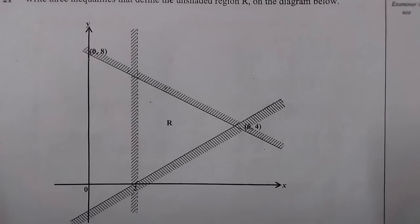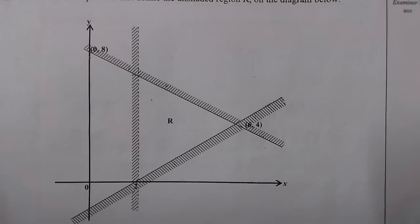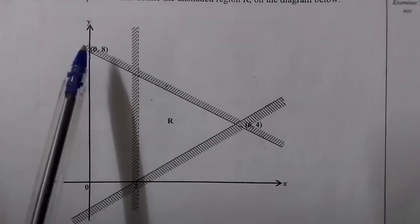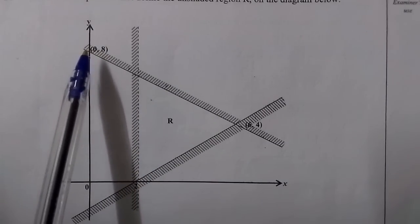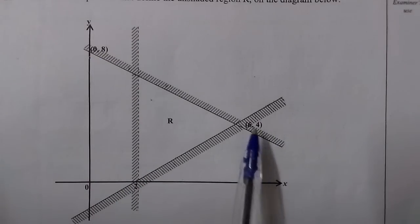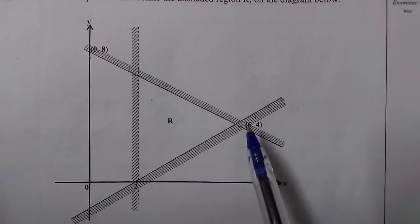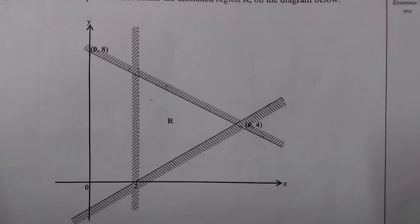The region R is bounded by three lines. The first line is the vertical line passing through x = 2. Then we have a slanted line passing through the two points (0, 8) and (6, 4). Then another slanted line passing through (2, 0) and (6, 4). We're going to start with determining the inequality for the vertical line passing through x = 2.